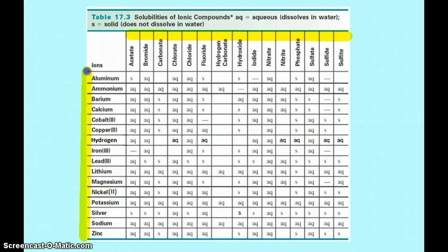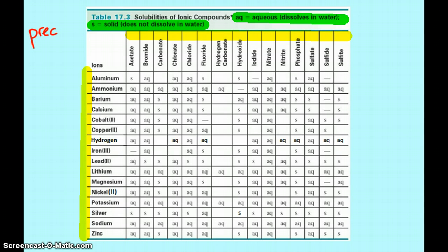You just have to match a positive ion with a negative ion for whatever compound you have, and it will tell you whether or not something is AQ — aqueous — which means it will dissolve in water. Or S means it's a solid; it does not dissolve in water. And when that happens, that's what we call a precipitate.